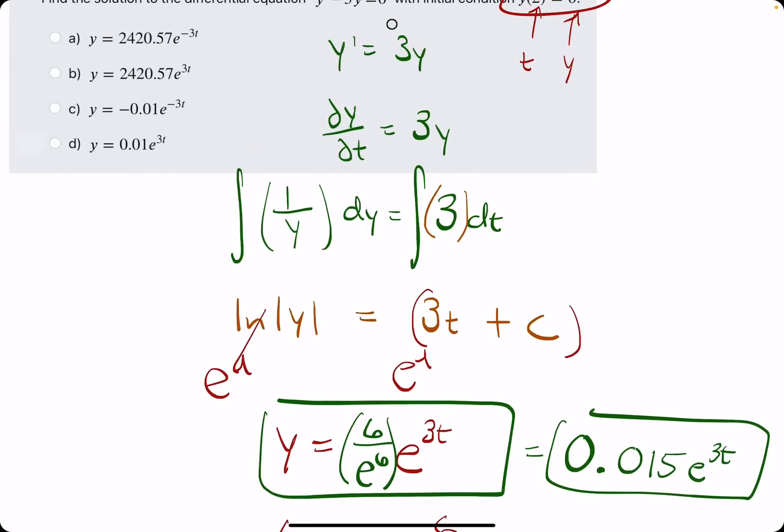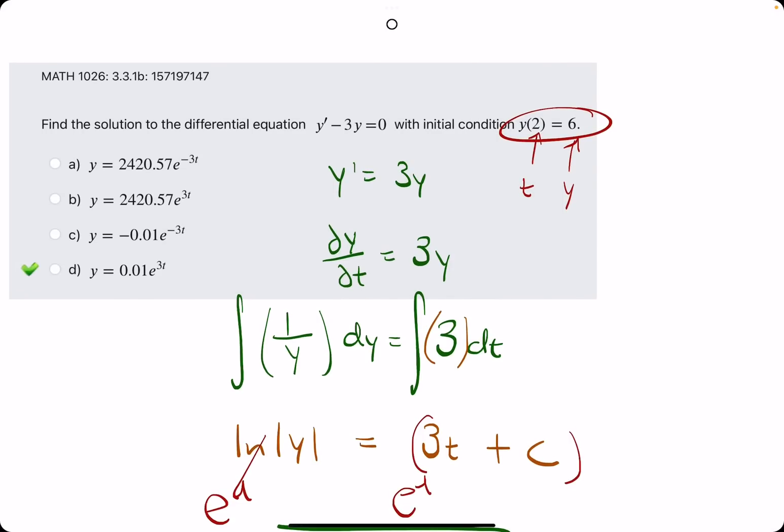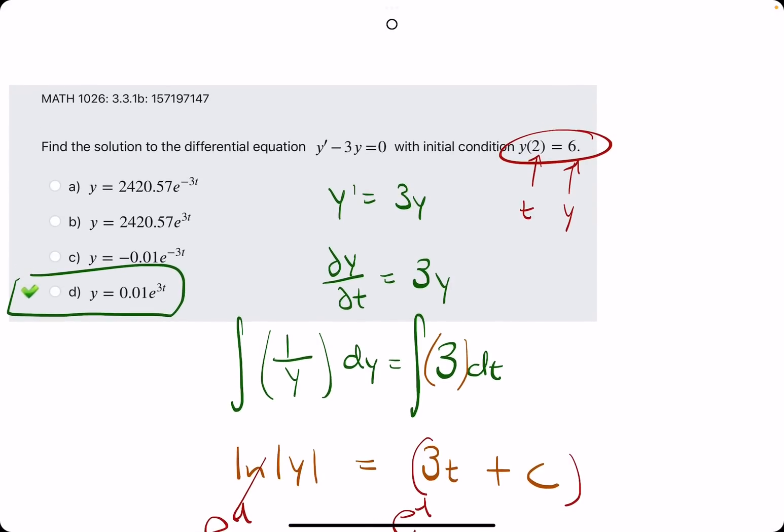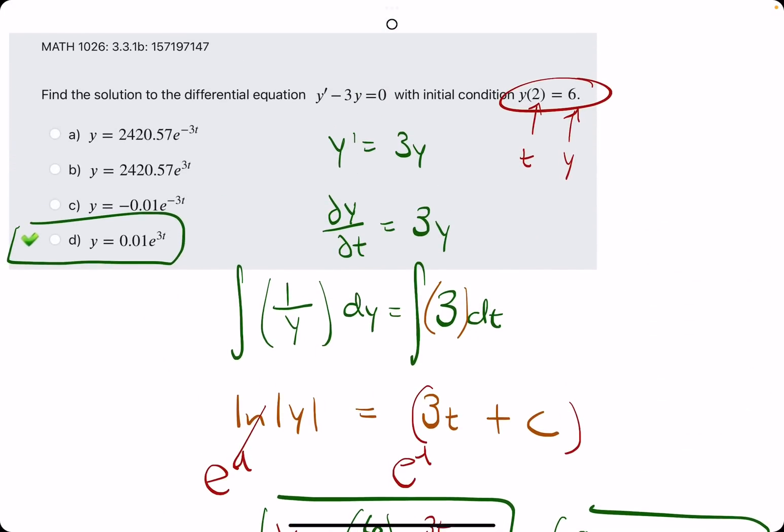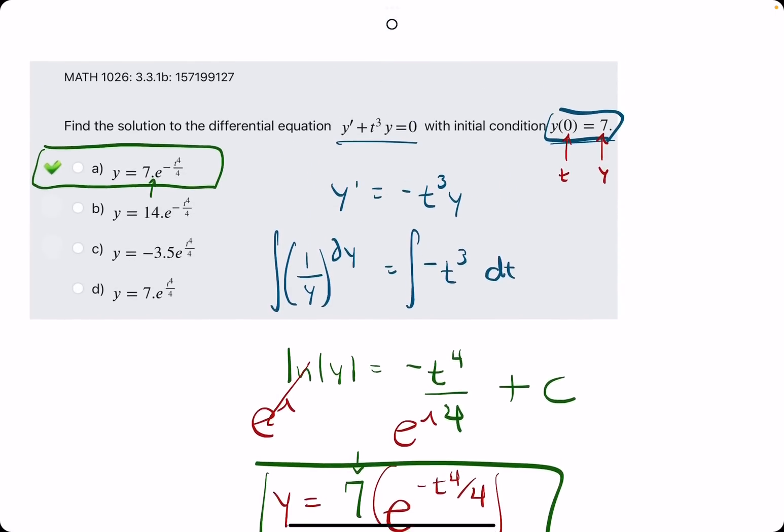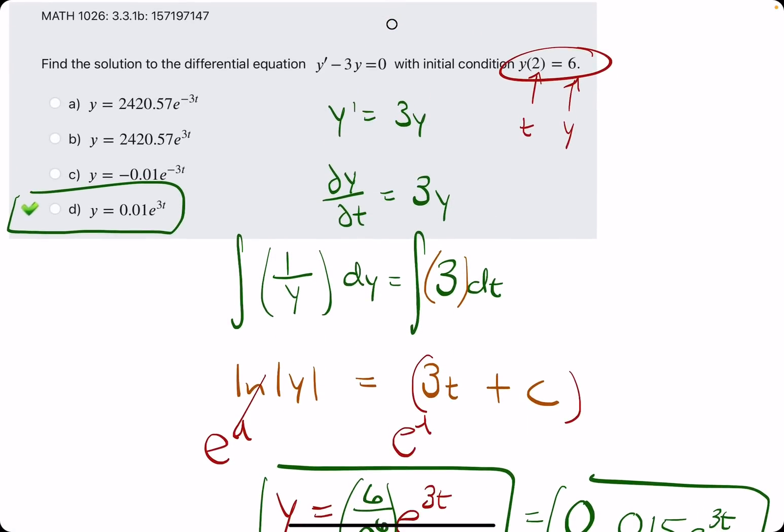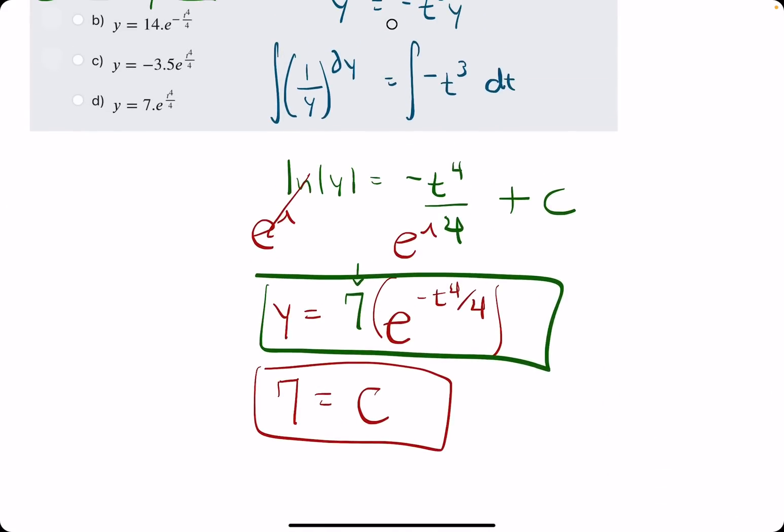So just positive 0.015 e to the three t is what we're looking for. And so hopefully we got the right one with the positive. It looks like option d is our answer. So slightly different one with kind of a weird decimal value for c, but nonetheless the same process. If you have any questions on this method or any specific problems you get, please let me know. Hope this helps.